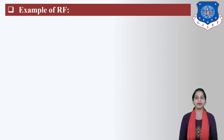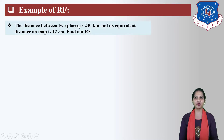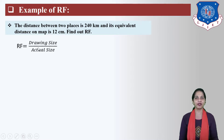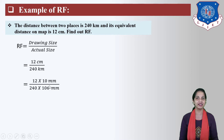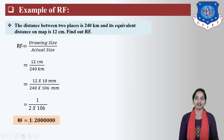Next, let us take one example of RF. The distance between two places is 240 km and its equivalent distance on the map is 12 cm. Find out RF. We know RF equals drawing size divided by actual size. Drawing size is 12 cm and actual size is 240 km. Convert both to mm: 12 cm becomes 120 mm, and 240 km multiplied by 10 to the power 6. RF is equal to 1 upon 2 into 10 to the power 6.